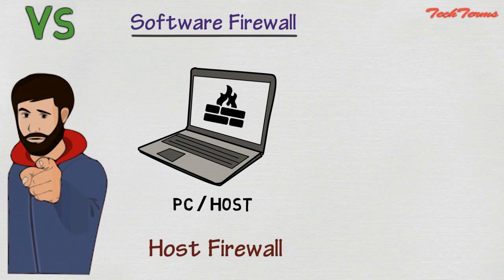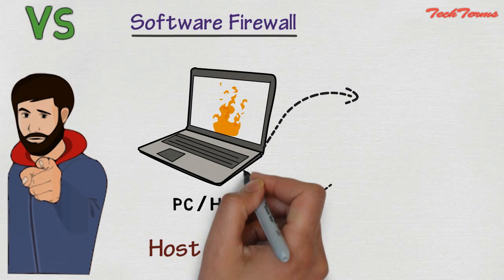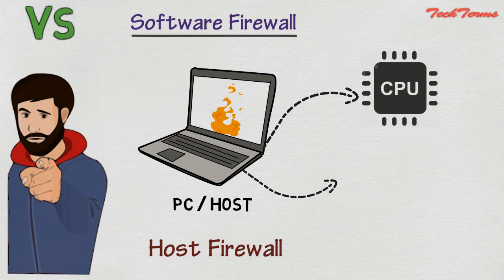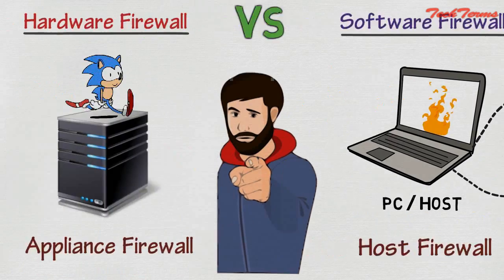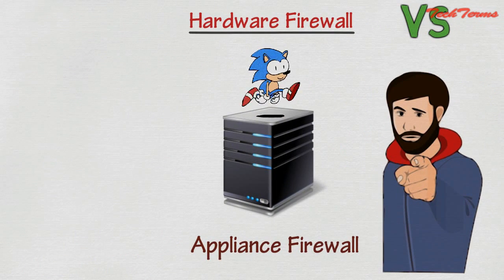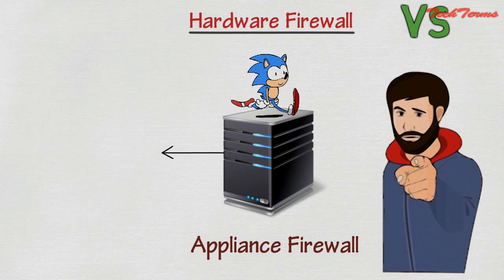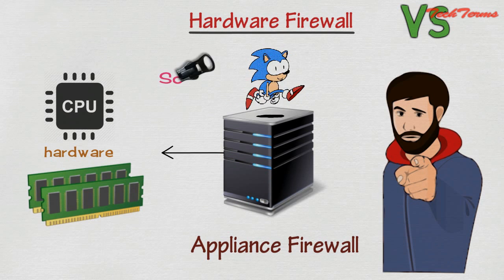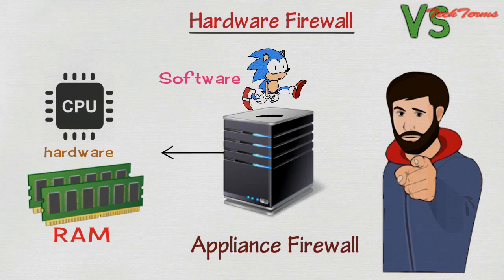As a software firewall is present in our PC, it will consume computer resources like the computer's processor, computer's RAM, etc. On the other hand, a hardware firewall is a separate device attached with a computer having its own hardware and software — that is, it does not use the computer's RAM, CPU, etc.